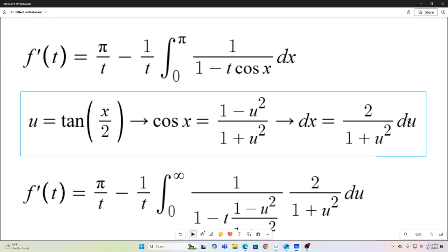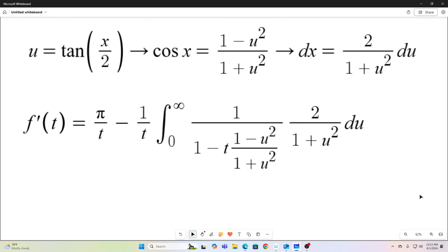So the next step is I just plug that in. I replace cos x with 1 minus u squared over 1 plus u squared and replace the dx with 2 over 1 plus u squared. And of course we need to change our bounds of integration. If our u is tangent x over 2, then our upper bound is tangent of π over 2, that is infinity. Our lower bound becomes tangent of 0 over 2, which is just 0. All right, so that's our new expression for f prime of t.